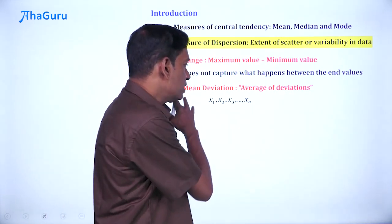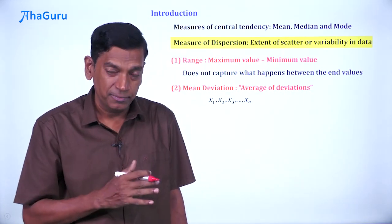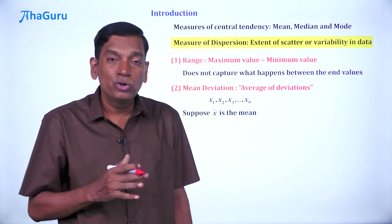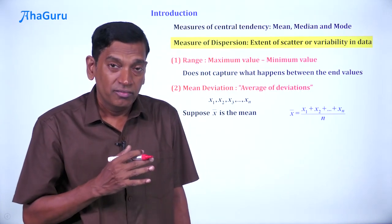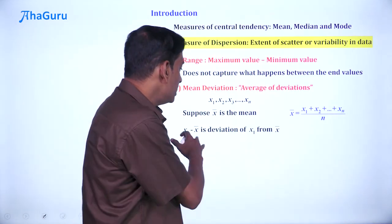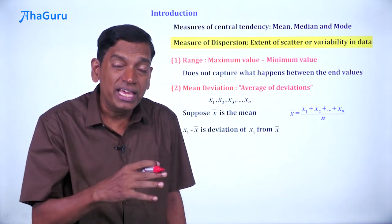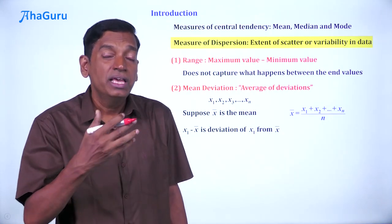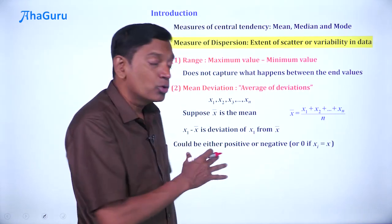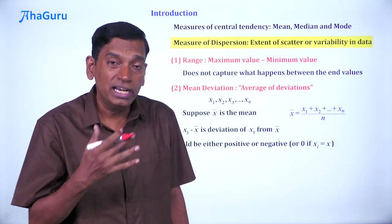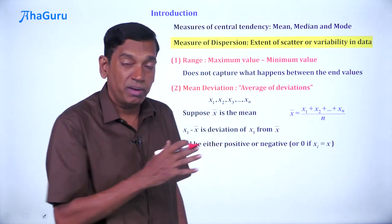Well, suppose we have x1, x2, x3, etc. till xn and suppose x̄ is the mean, then we know that x̄ is x1 plus x2 till xn by n. Now, x1 minus x̄ is the deviation of x1 from x̄.